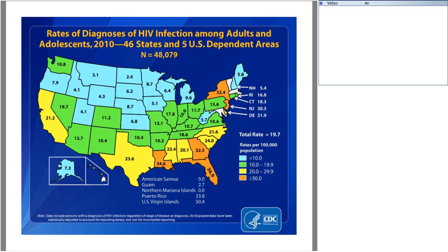This slide looks at the rates of diagnosis of HIV infection among adults and adolescents in 2010. The highest rates of HIV infection continue to be in the South — states shown in orange, particularly Louisiana, Georgia, and Florida, as well as New York and New Jersey — had the highest rates of HIV infection among the 46 states and five U.S. dependent areas reporting. These are closely followed by other southern and surrounding states, which constitute very high rates of HIV infection in 2010.